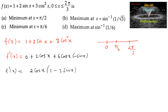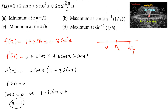The minimum or maximum is obtained when f'(x) = 0. So either cos(x) = 0, or 1 − 3sin(x) = 0, which gives sin(x) = 1/3.